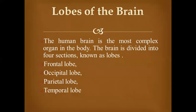We agreed to talk about the lobes of the brain — their location and function. The human brain is the most complex organ in the body. The brain is divided into four sections known as lobes: the frontal lobe, occipital lobe, parietal lobe, and temporal lobe.